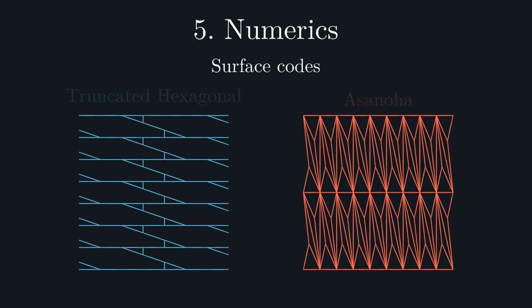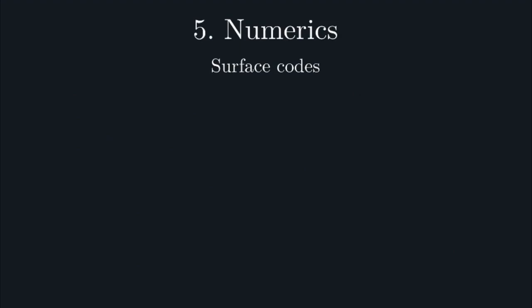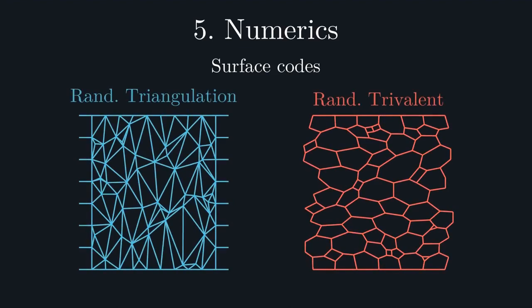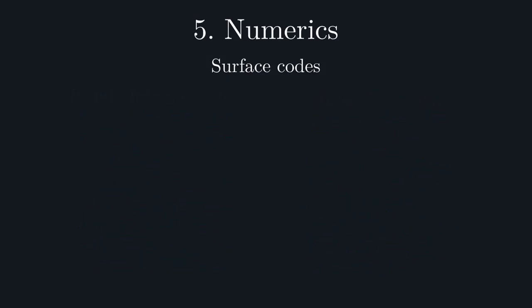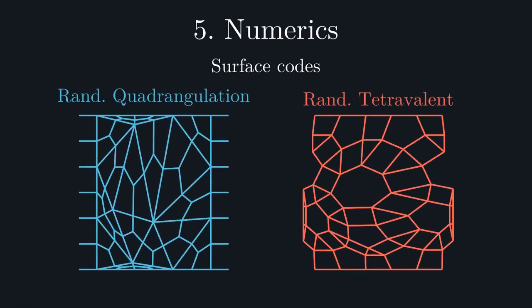As well as these regular lattices, we also consider two dual pairs of random graph families. Namely, random triangulations and random trivalent graphs, and random quadrangulations and random tetravalent graphs.